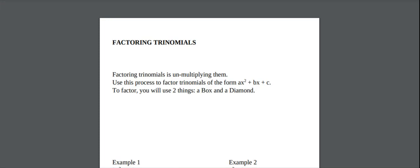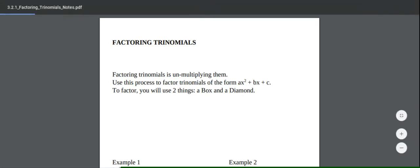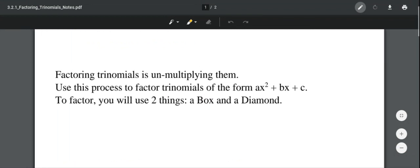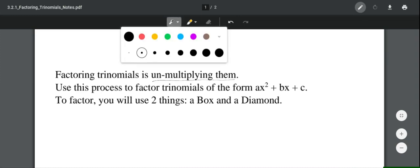Okay, so we are going to be learning about factoring trinomials. This is putting everything that we learned last week into one thing. So factoring you guys have done before, but probably not with a box and diamond. So using this process, we're first going to, factoring trinomials is unmultiplying them. So remember, a trinomial you can get by multiplying two binomials. So we are going to try to unmultiply them.